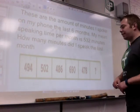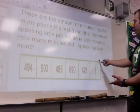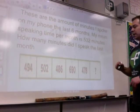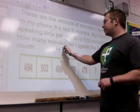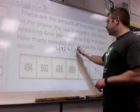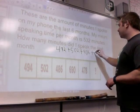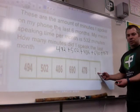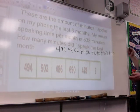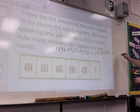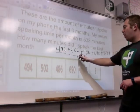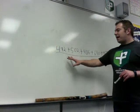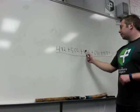So these are the amount of minutes I spoke on my phone the last six months. My mean speaking time per month, my average, is 532 minutes per month. How many minutes did I speak in the last month? So let's say January, February, March, April, May, June. I don't know how much I spoke in June. But I know that I spoke these amounts in the other months. So I'm going to set it up like this. So this is 492 plus 502 plus 486 plus 690 plus 478. And let's say this was the month of June. I'll use the variable plus J equals. Now my average was 532 minutes. But to get the average, you add all of these up and divide by the amount of months there was. So I had 1, 2, 3, 4, 5, 6 months.